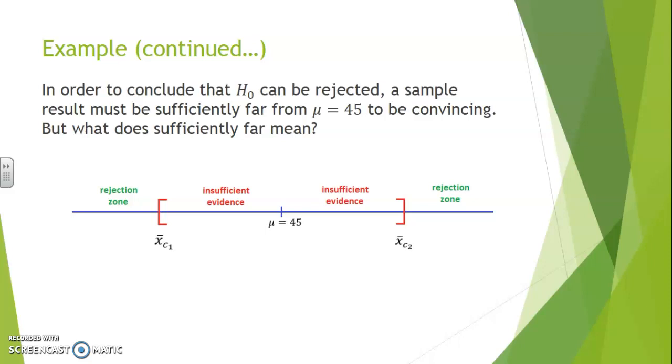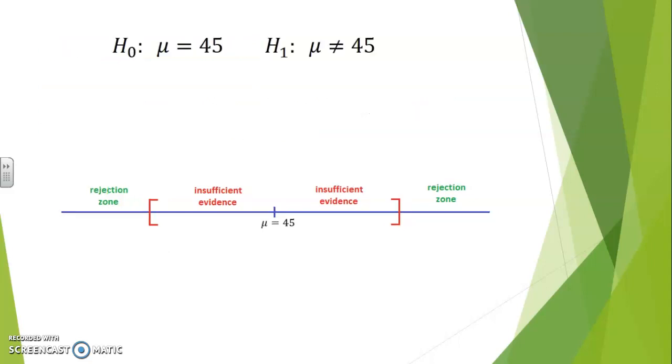The borders starting from which the rejection zones begin are called the critical sample means. There's one for the left rejection zone and one for the right rejection zone in this case. So this time, as we confront mu equals 45 with mu unequal to 45, we are looking at a two-sided test where two possible results could lead to the rejection of H0.